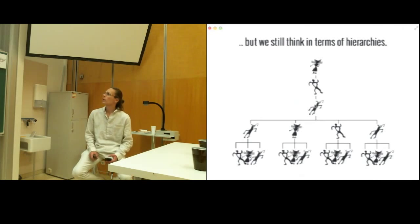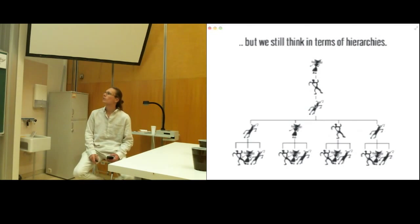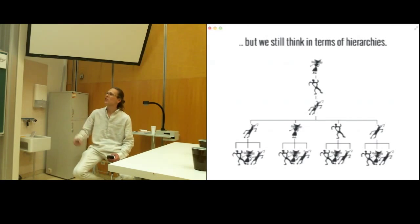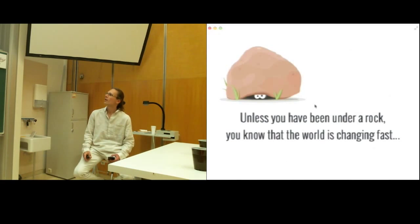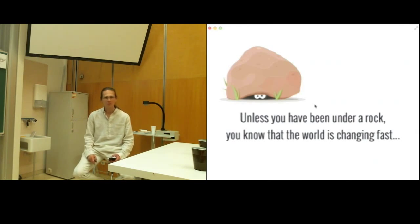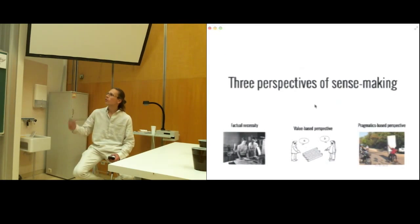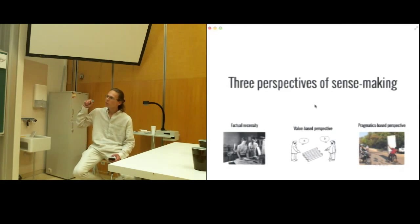But we still think and construct our governance systems in terms of these stable states, and it is clearly not adequate. But is it possible to think of our systems and make sense of them in another way? One way to try to answer this question is to look at how do we make sense in general of everything. We single out three interrelated aspects of sense-making, and we always use all three of them, but the difference is which one we emphasize depending on the situation or the system we are analyzing.